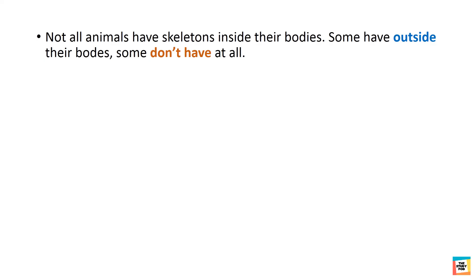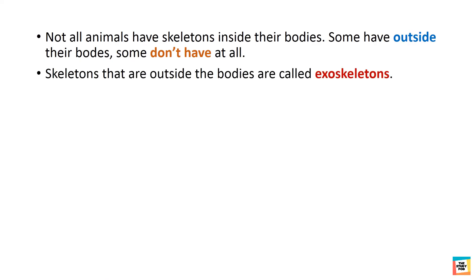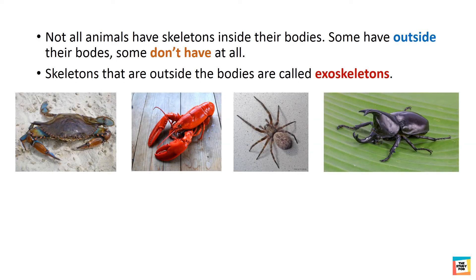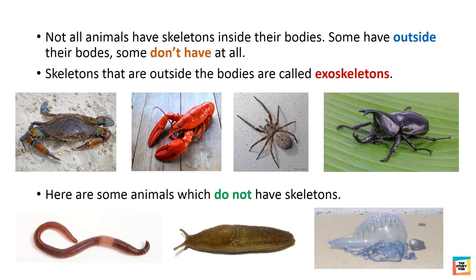Not all animals have skeletons inside their bodies. Some have skeletons outside their bodies, and some don't have any at all. Skeletons that are outside the body are called exoskeletons. The shells of crabs and lobsters, and the hard outer covering of spiders and beetles, are some examples of exoskeletons. Earthworms, slugs, and jellyfish do not have any skeletons, which is why they move very slowly.